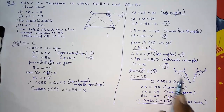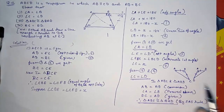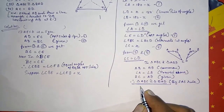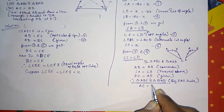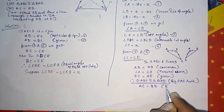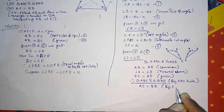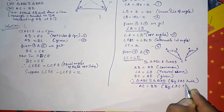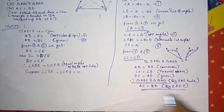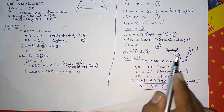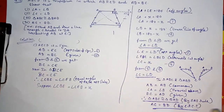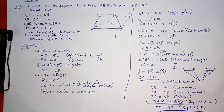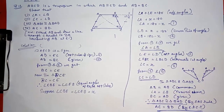Since triangle ABC is congruent to triangle BAD, we can say AC equals BD by CPCT — corresponding parts of congruent triangles. This is our Answer 4. Thank you so much for watching my video. If you like it, please subscribe to my channel.